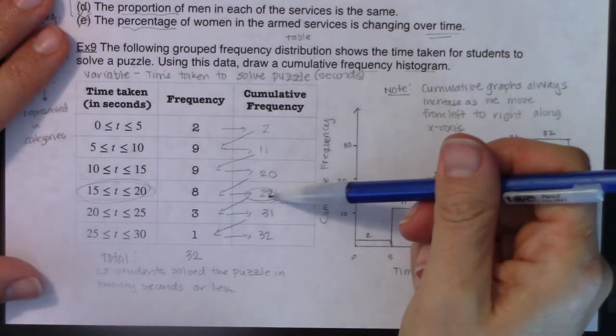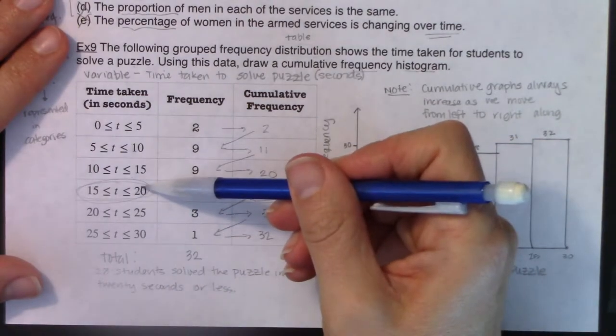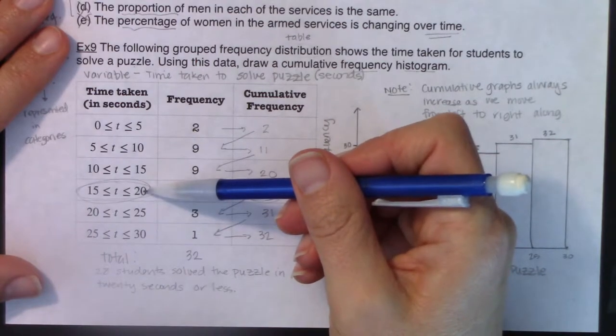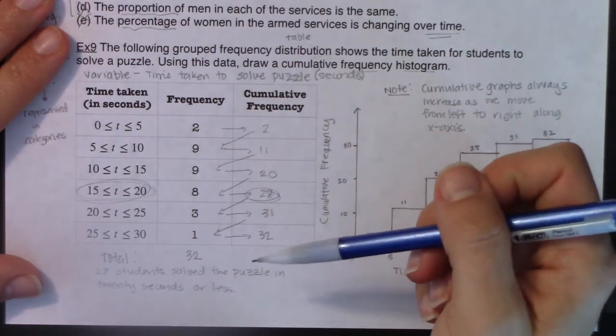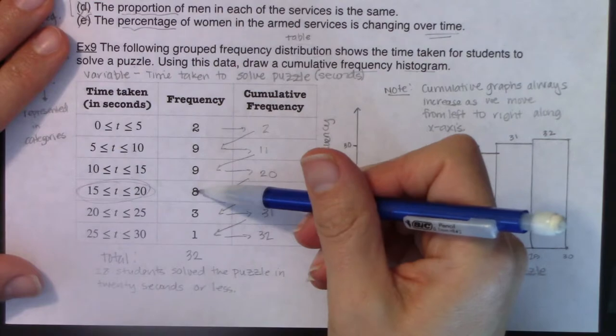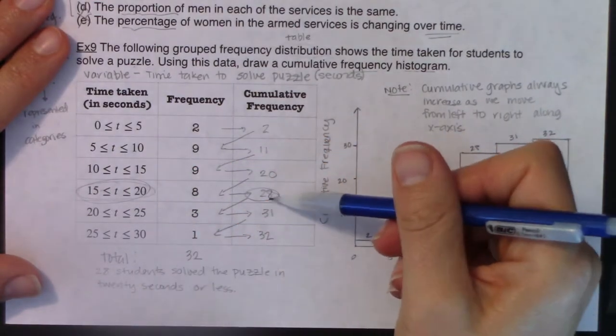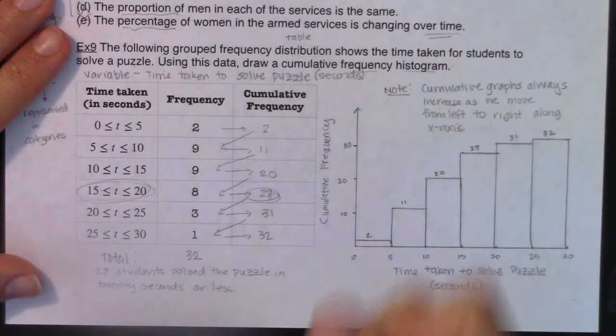How could I have written a sentence about this? Our variable 15 to 20 and 28. I could say 28 students solved the puzzle in 20 seconds or less. So it's always, you take your cumulative frequency count, and it's just your x value or less. So 28 students took them 20 seconds or less to solve this puzzle. Eight students exactly solved the puzzle between 15 and 20 seconds, but 28 of them, so a good chunk of them, were solving it in 20 seconds or less.